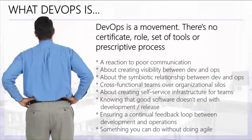DevOps is also about knowing that good software doesn't end with just development and release. These days you have multiple versions of software coming out, so you need to revise and create revisions — maybe add new aspects to the enterprise software. It also ensures a continual feedback loop, which is really what made DevOps come about: a continuous feedback loop between development and operations.